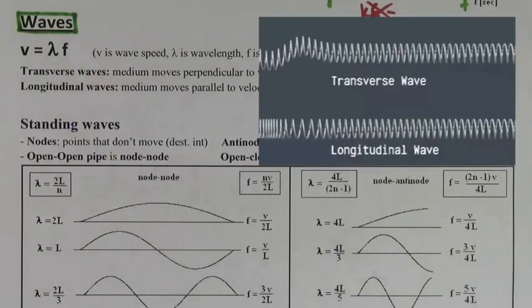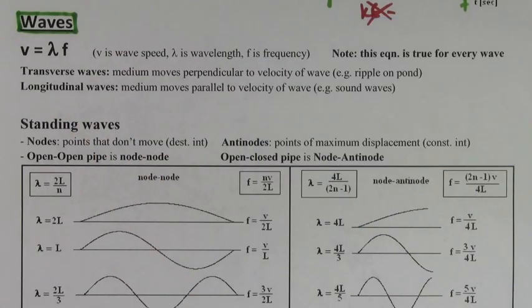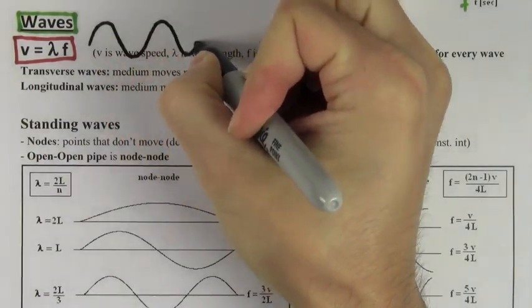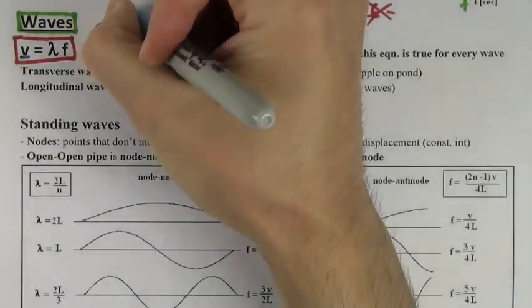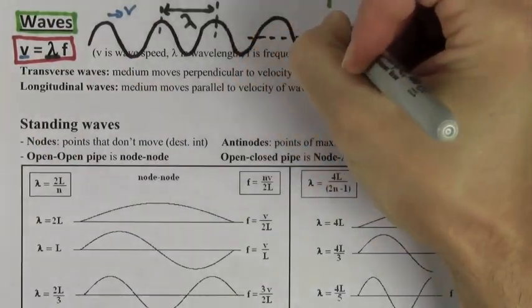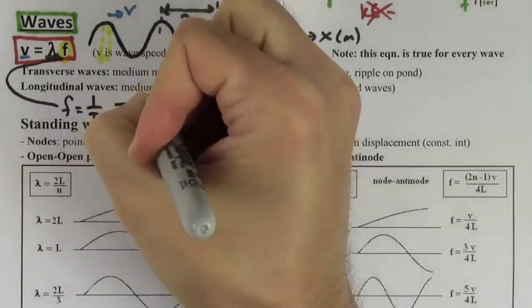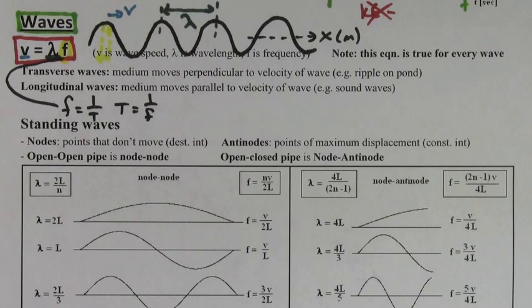Waves occur when you disturb a medium, causing ripples to spread outward. The speed of any wave can be found by multiplying the wavelength by the frequency. The speed of the wave refers to how fast the wave peaks are moving. The wavelength is the distance between peaks, which is different from the period. The period is the time in seconds for one peak to travel one wavelength. The frequency is the number of times a point on a wave oscillates up and down in one second. Remember that frequency is just one over the period, and the period is just one over the frequency.